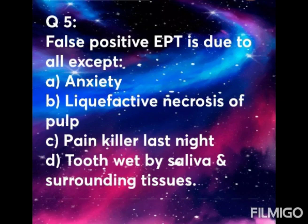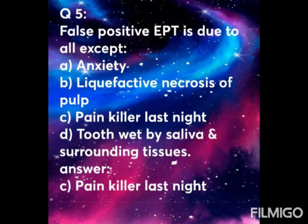Question 5: False positive electric pulp test is due to all except — Option A: anxiety. Option B: liquefactive necrosis of pulp. Option C: painkiller last night. Option D: tooth wet by saliva and surrounding tissue. The answer is Option C — painkiller last night. Anxiety, liquefactive necrosis, and tooth wet by saliva are causes of false positive, but painkiller last night is the exception.